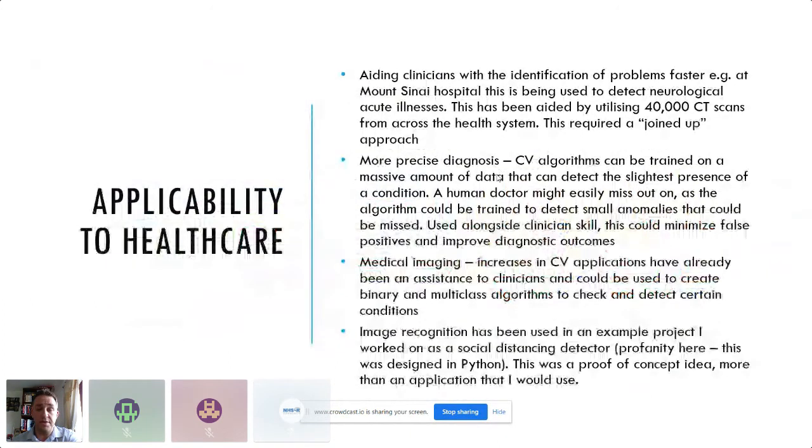The applicability to healthcare. There's lots of real good examples of where computer vision has been used in the live environment in practice. Aiding clinicians with faster identification of problems. At Mount Sinai Hospital, this has been used to detect neurological acute illness. 40,000 CT scans were used from across the healthcare system, and it required them to have a joined-up data sharing approach. That needs to be in place, like Sarah Corkin mentioned, around a testing imaging database.